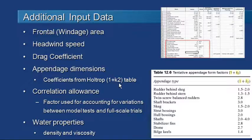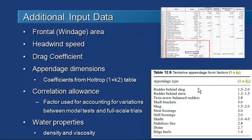There are also some coefficients that you can enter. This is the same coefficient as defined by Holtrop — the 1+K2 coefficient as he refers to it — and there are different coefficients for different kinds of appendages, such as rudders, skegs, bilge keels, and so on.